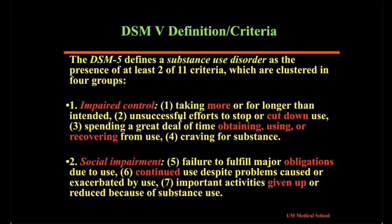In order to diagnose alcohol or substance use disorders, we follow the DSM-5. The DSM-5 requires specific criteria to be met before an official diagnosis is made. There are four categories for these criteria.